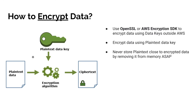This diagram shows how the plain text data key is used to encrypt a large amount of data. Once you encrypt it, it outputs ciphertext — the encrypted data — and no one can understand its contents. After encrypting, you remove the plain text key and store the encrypted version of the data key alongside the ciphertext. You can use OpenSSL or the AWS Encryption SDK to perform this encryption process outside of AWS.